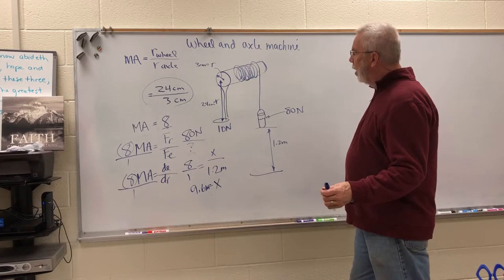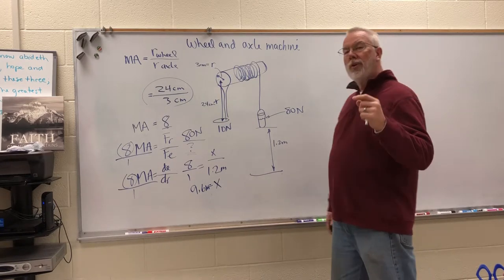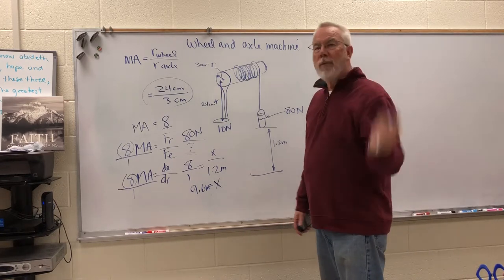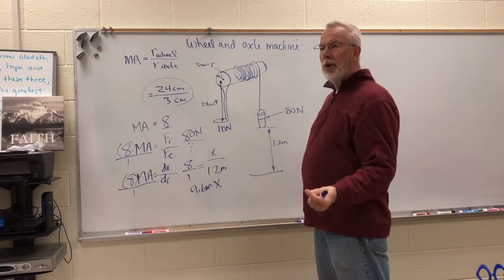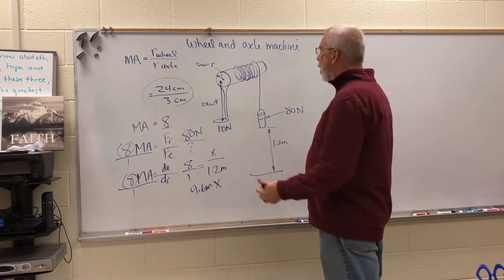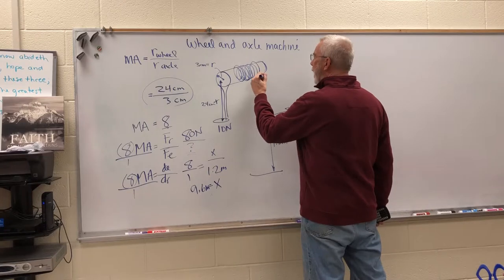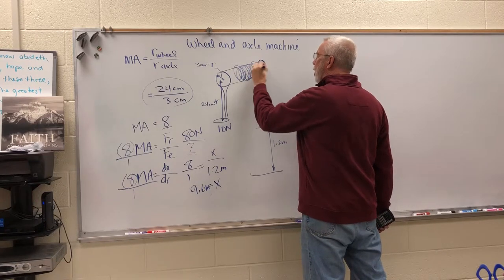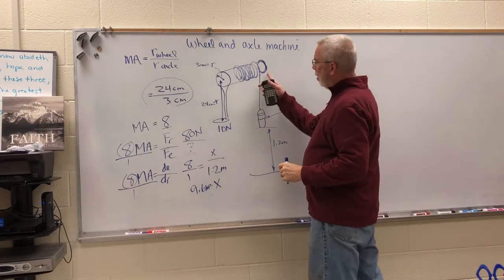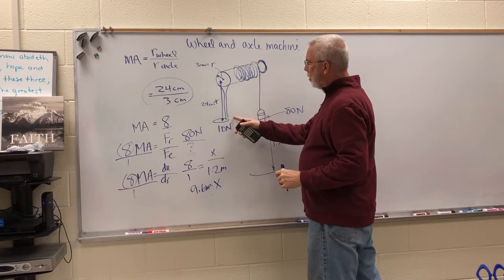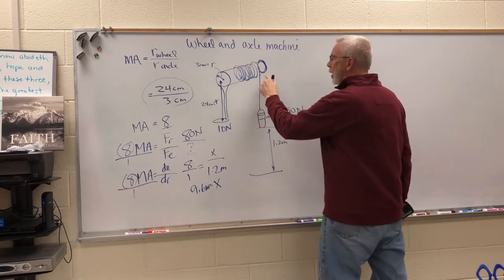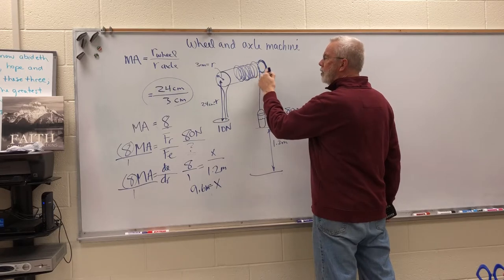Now in class I try to get the students to see how many revolutions do we need to turn the handle. Well a revolution is based on the circumference of the axle or the circumference of the wheel. Let's do the circumference of the axle. The circumference is equal to 2πr which is 6.28 times 3.